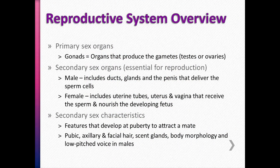In the reproductive system, the primary sex organs are the gonads. These are the organs that actually produce the gametes — the egg or sperm. For males, it's the testes that make the sperm, and for females, the ovaries that make the egg.